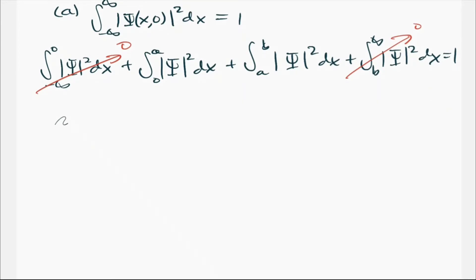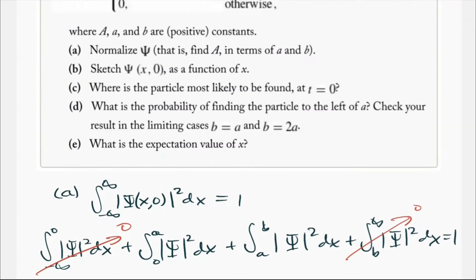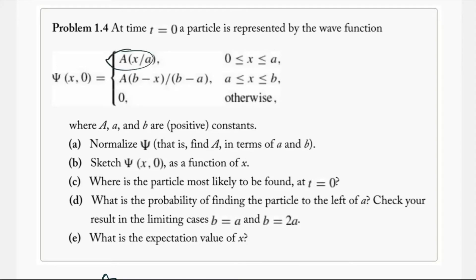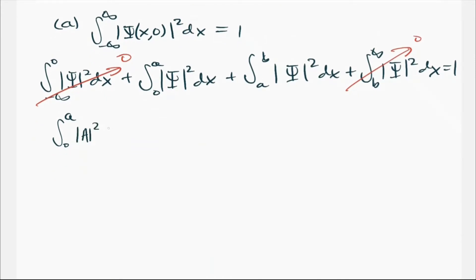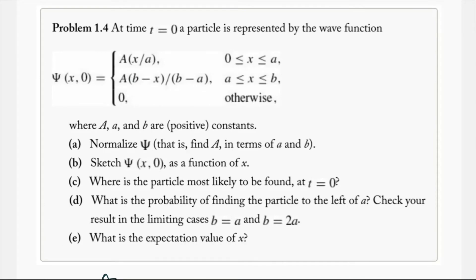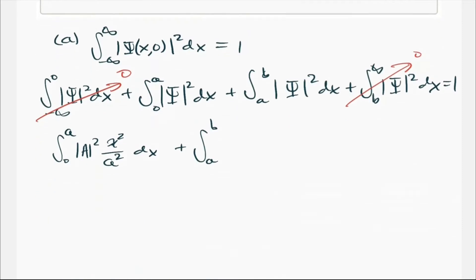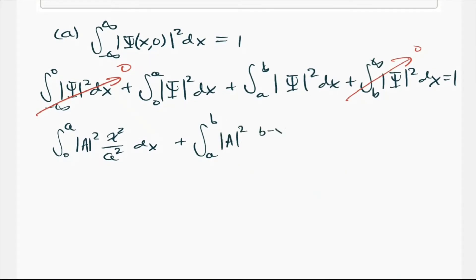Now we have the integral from 0 to a, where the wave function equals A times x over lowercase a. We square that to get A squared times x squared over lowercase a squared dx, plus the integral from a to b, where the wave function is uppercase A times (b minus x) over (b minus a). We square that to get A squared times (b minus x) squared over (b minus a) squared dx, equal to 1. The constants a squared, (b minus a) squared, and the uppercase A squareds can all be brought out front.